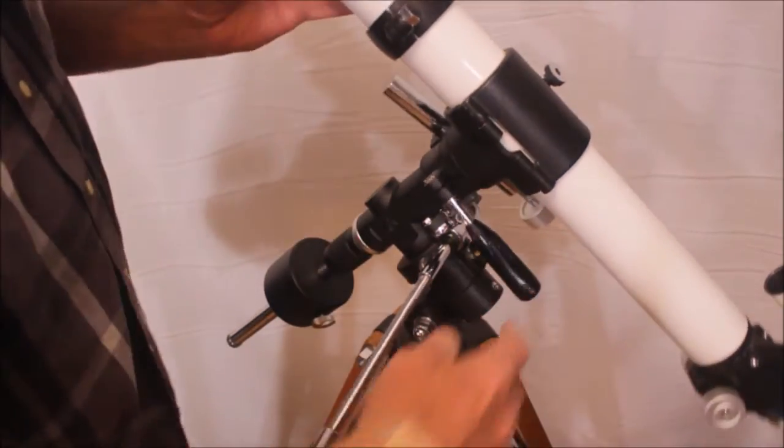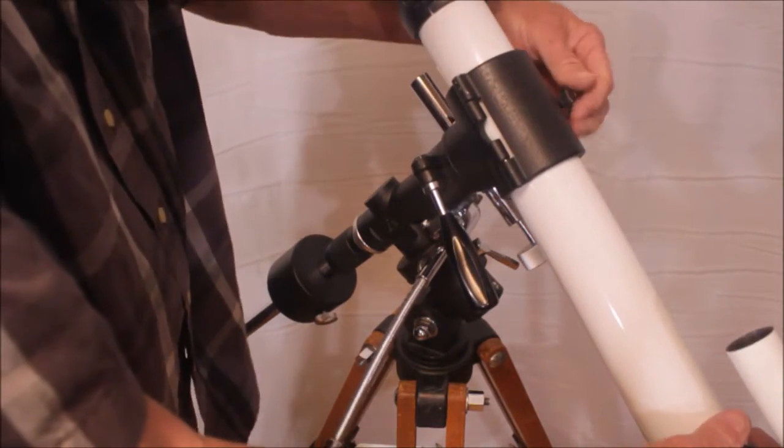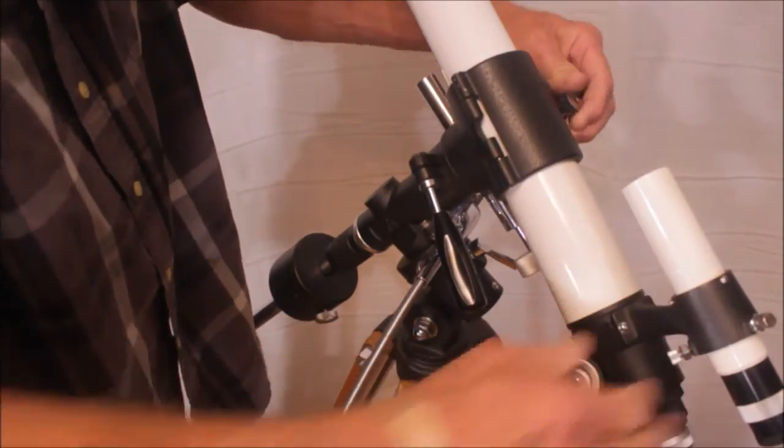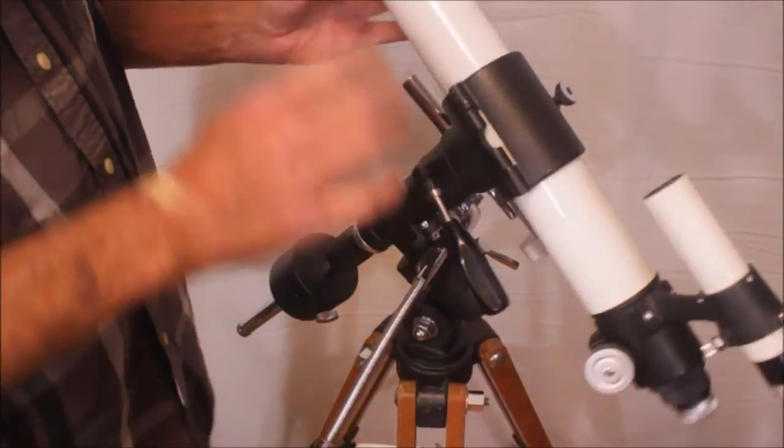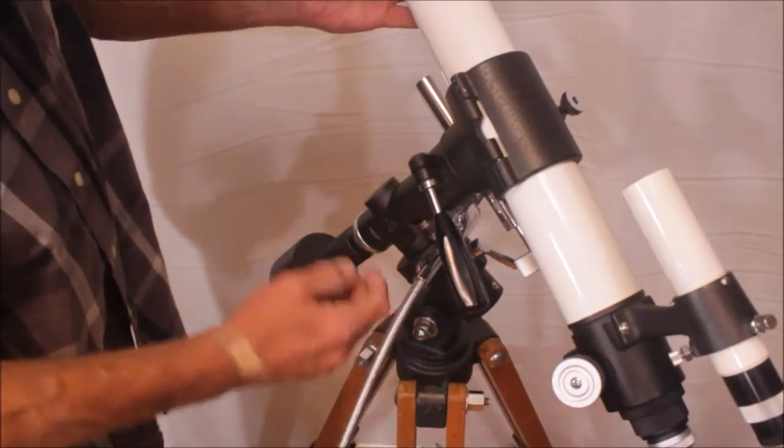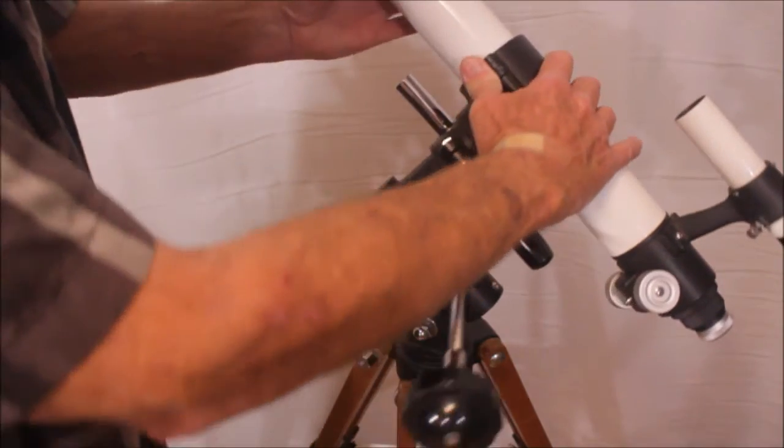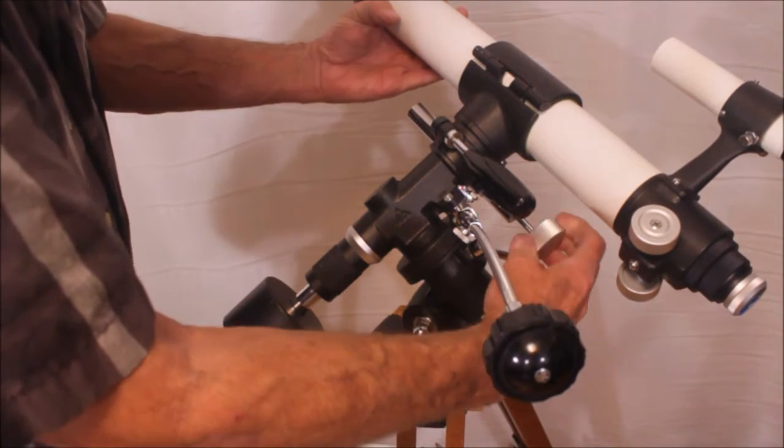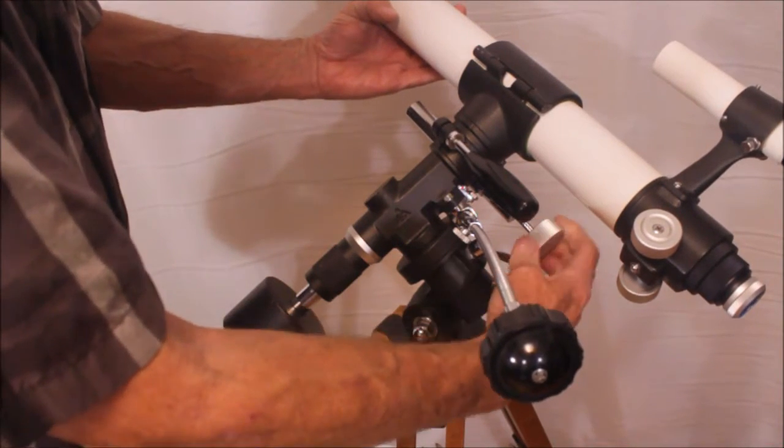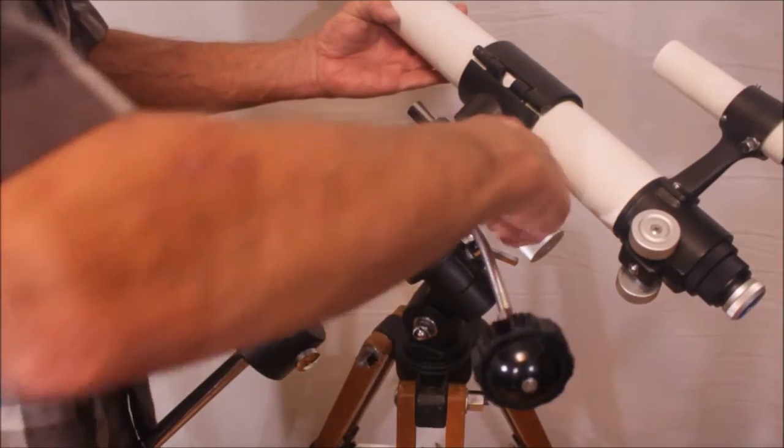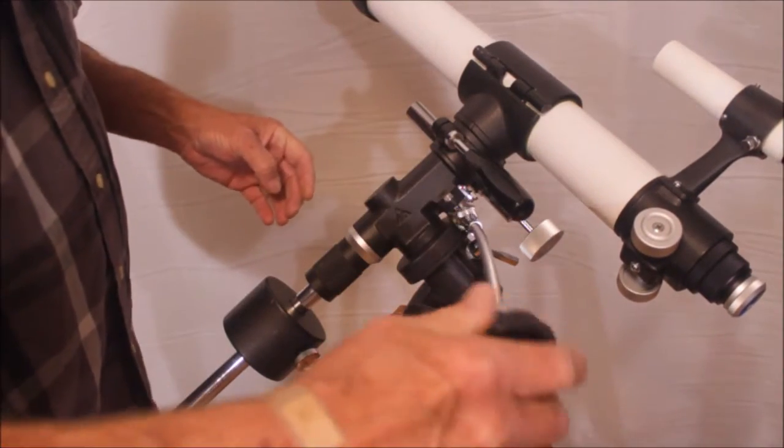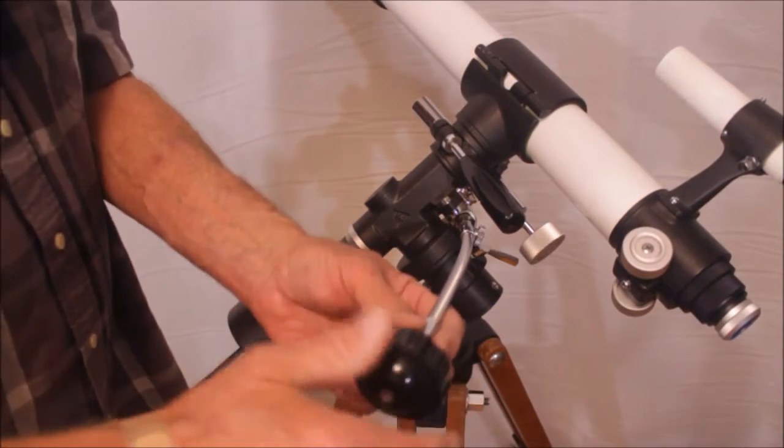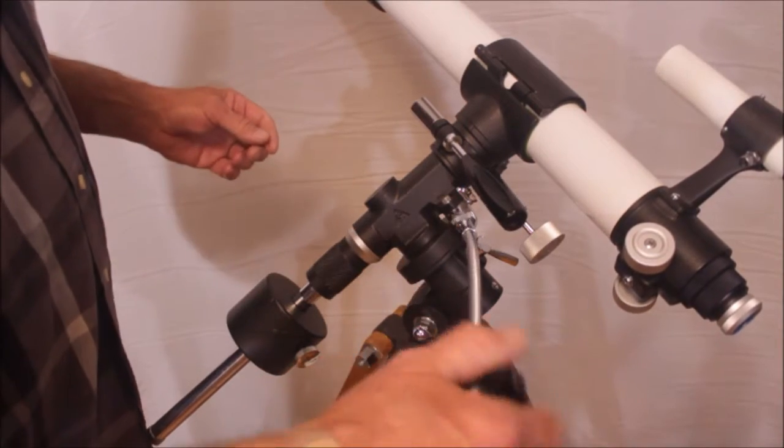Okay, any of you that are familiar with Takahashi will recognize this. This is almost identical. It is shocking how identical this is to a modern Takahashi. As a matter of fact, the slow motion controls here, the locks, everything is very, very similar. This has a tangent kind of declination slow motion, which is most adequate, more than adequate for what you might need. Here's the nice, oh, it's beautiful and smooth. After all these years, the thing works just beautifully as you would expect from a Takahashi.